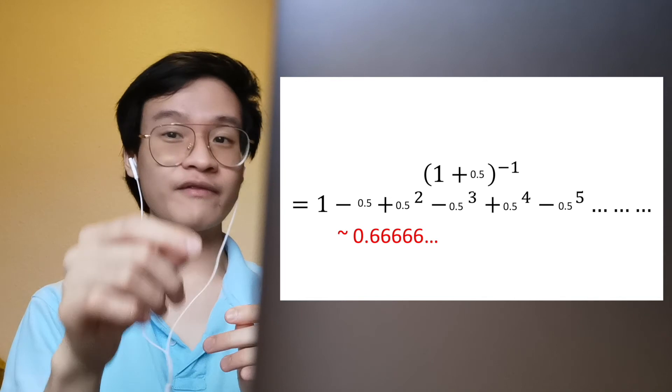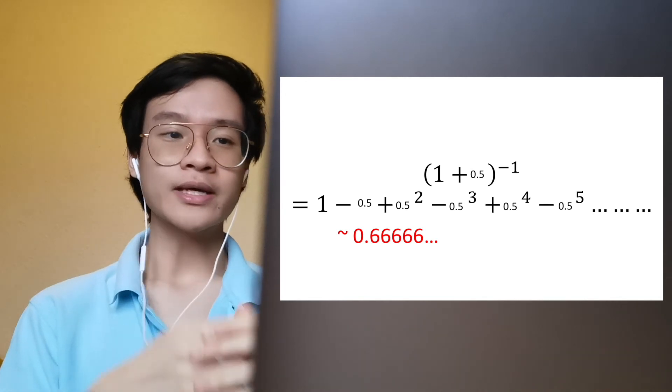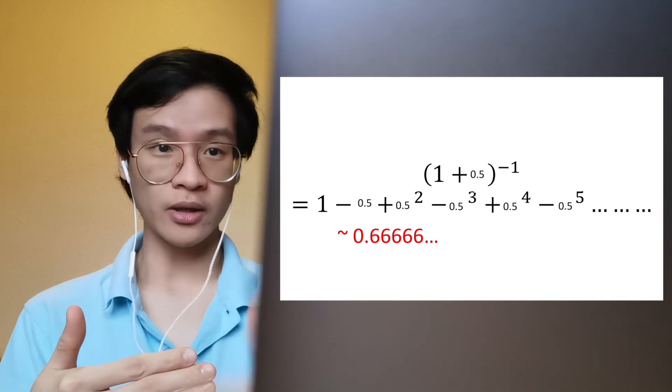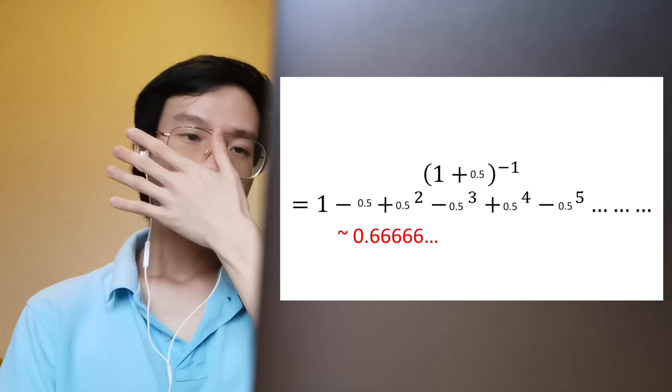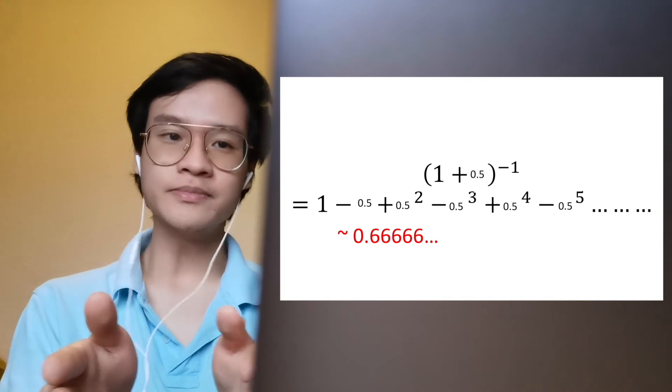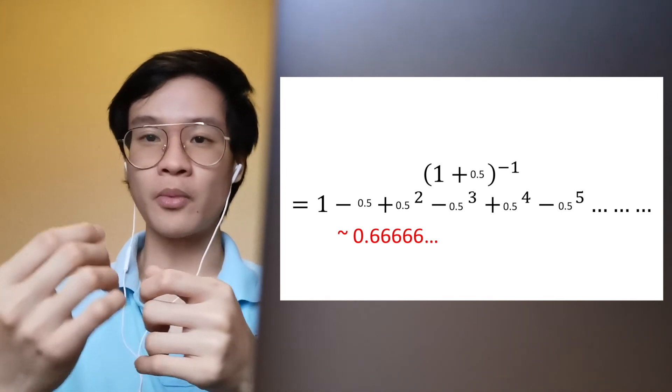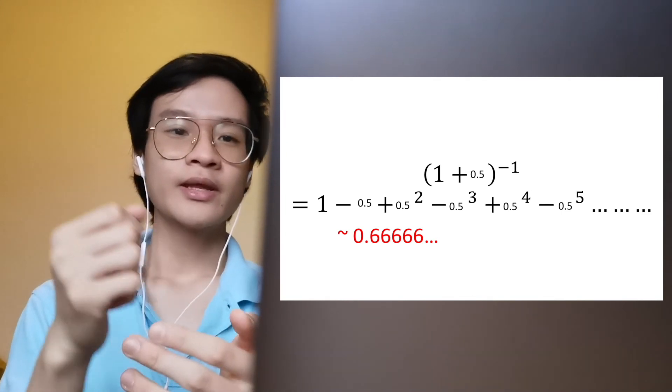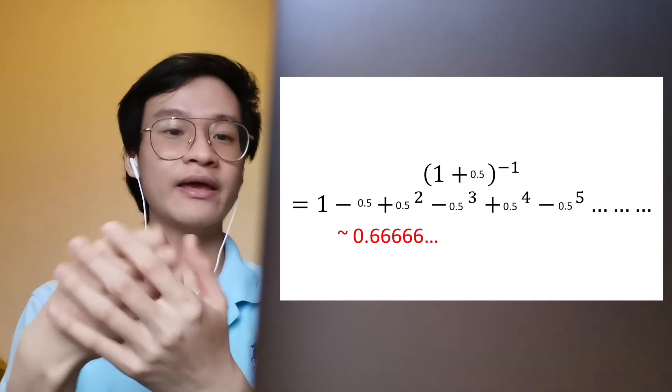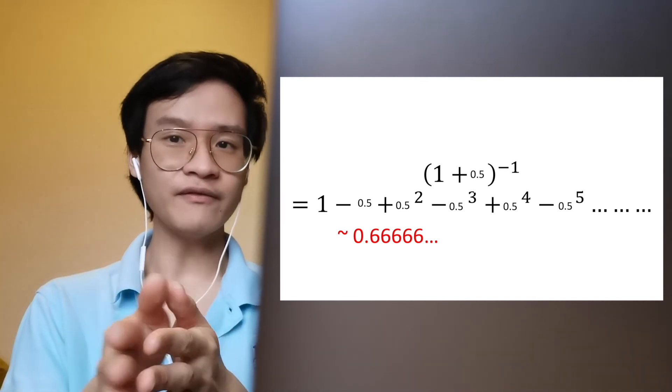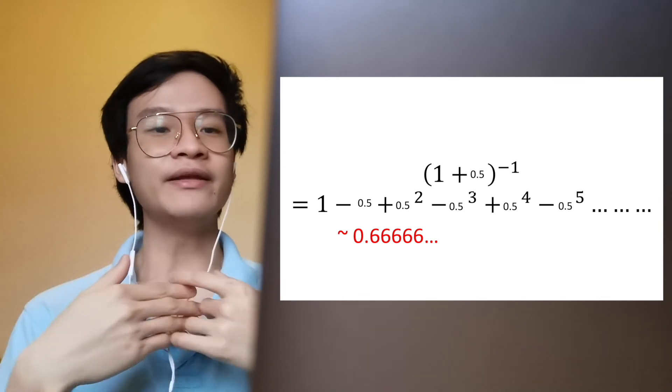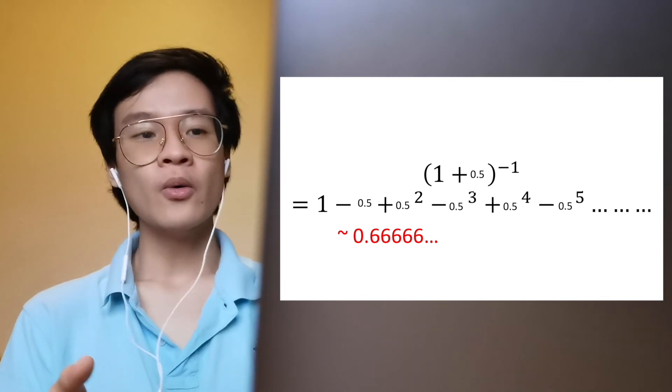If we substitute 0.5 into our expansion, you can see each term is getting smaller and smaller and the value is getting closer and closer to the true value. Adding the first five terms gives you 0.6875. The first seven terms gives you 0.671875, even closer to 2/3. And the first nine values will give you 0.66796. It's not exact but it's a very close approximate.